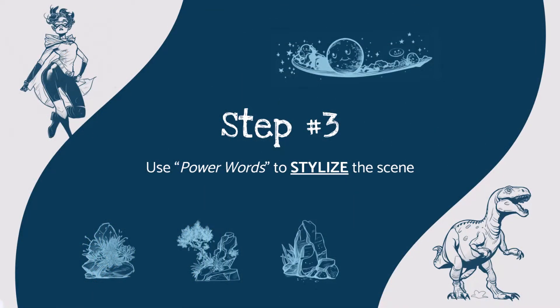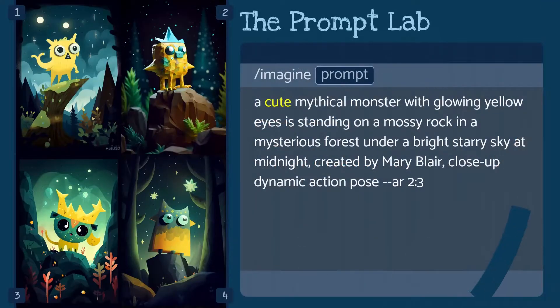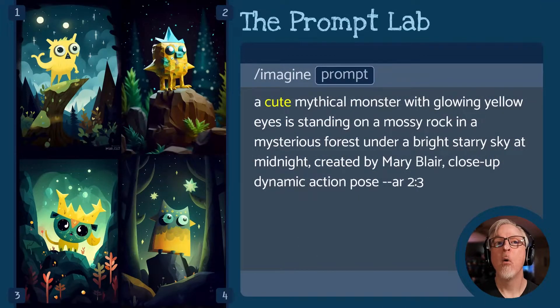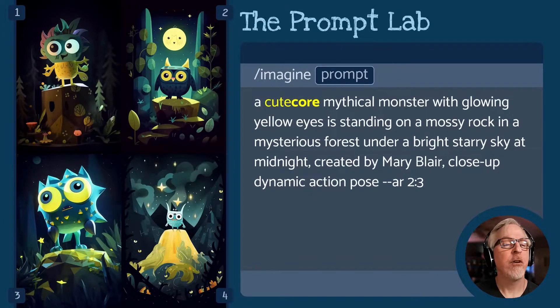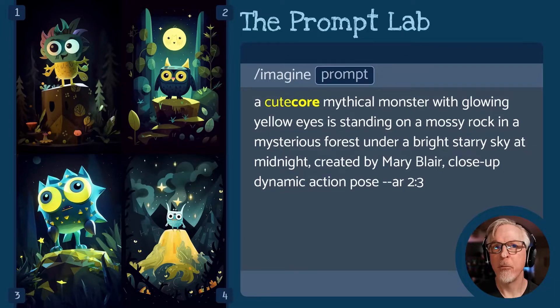In addition to adjectives, Midjourney also responds to special keywords or terms that act like special effects or wild cards. They're a little hard to predict, but they can definitely take your prompt to the next level. We're going to focus on just three today: core, wave, and punk. Back to our previous prompt — a cute mythical monster. Watch what happens when I add the suffix 'core' to the adjective 'cute.' The environment has changed, there's a lot more detail, the characters have more texture, and their forms are rounded. Essentially, core adds style — it's random style, but it's definitely worth experimenting.